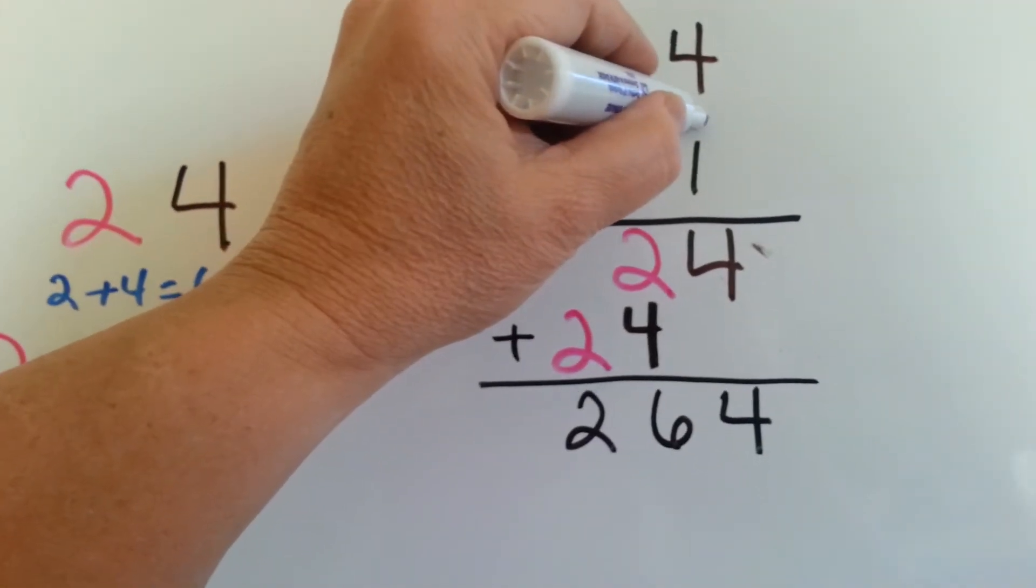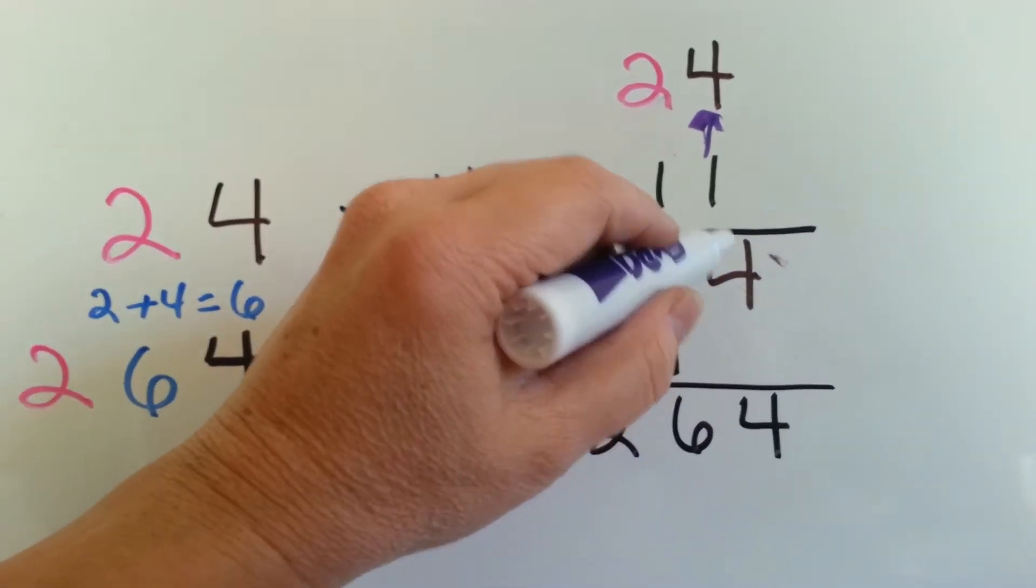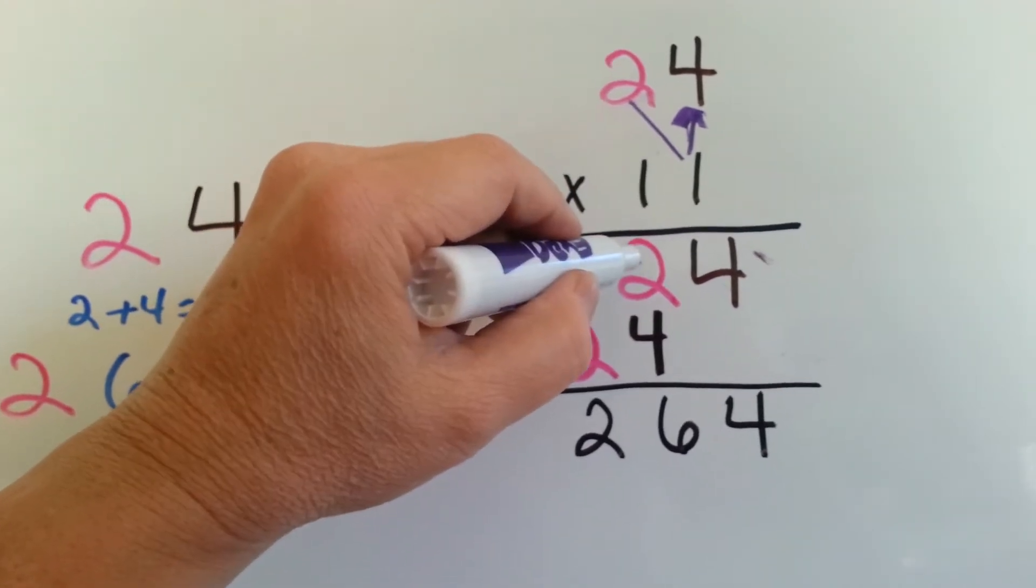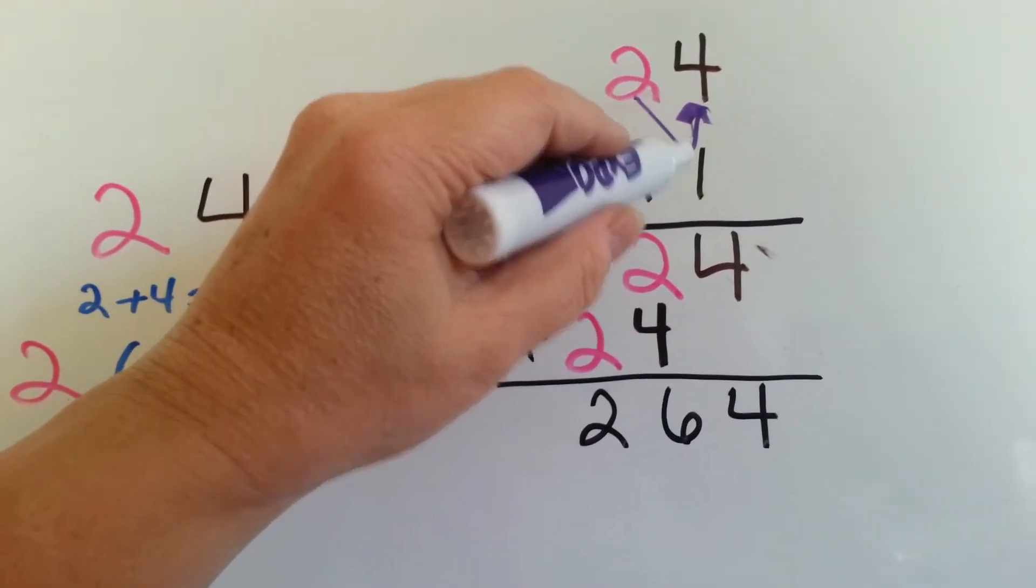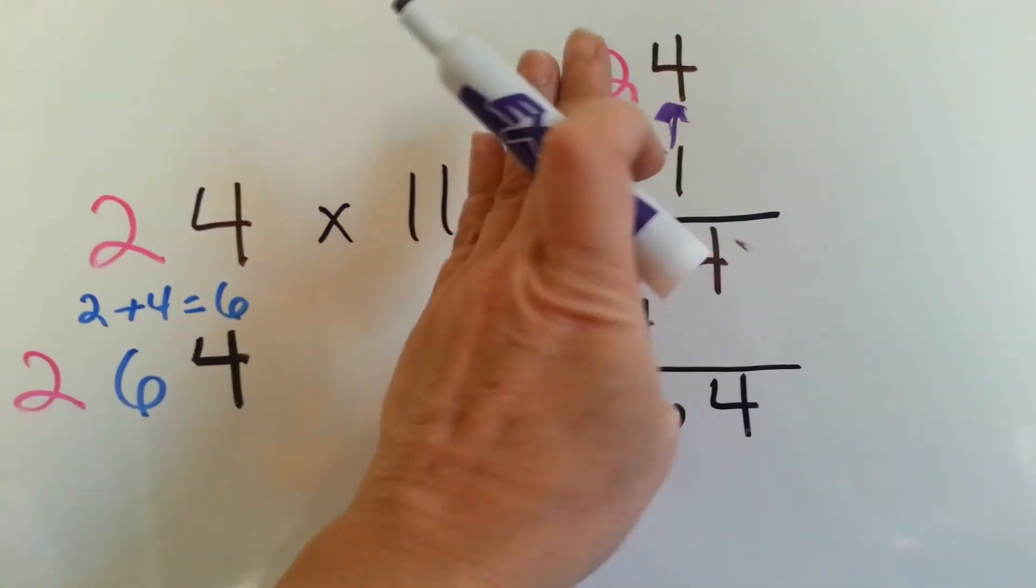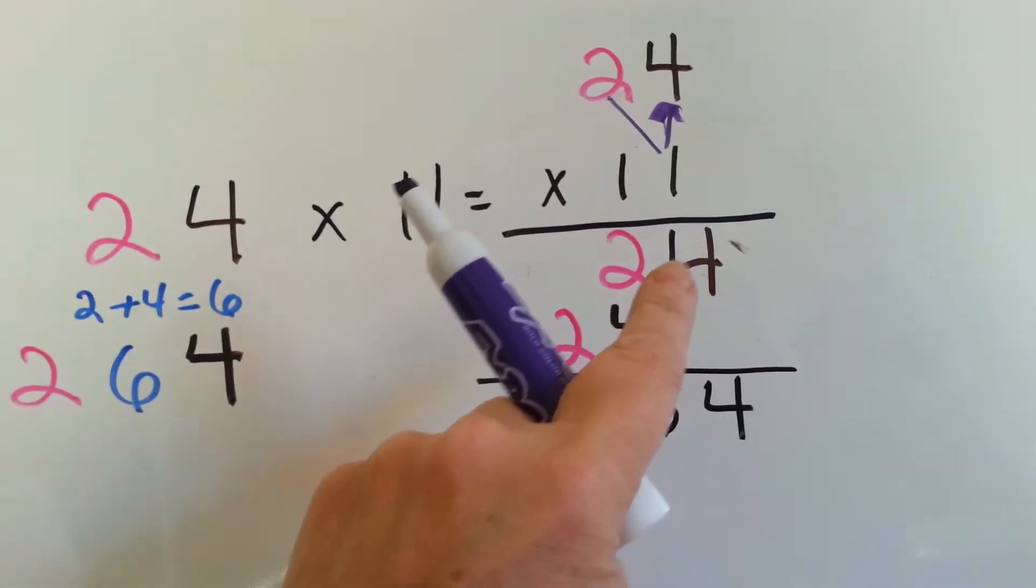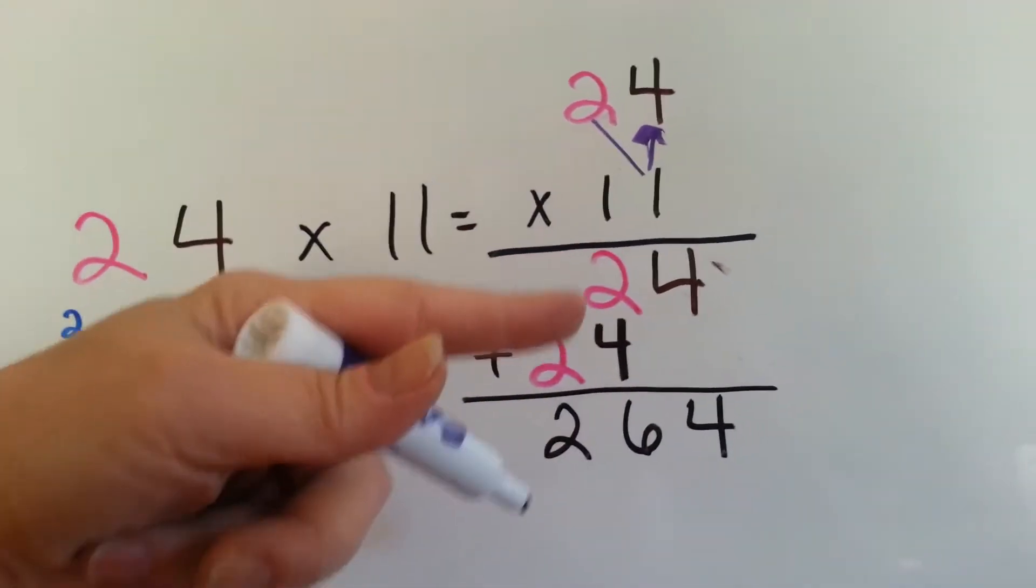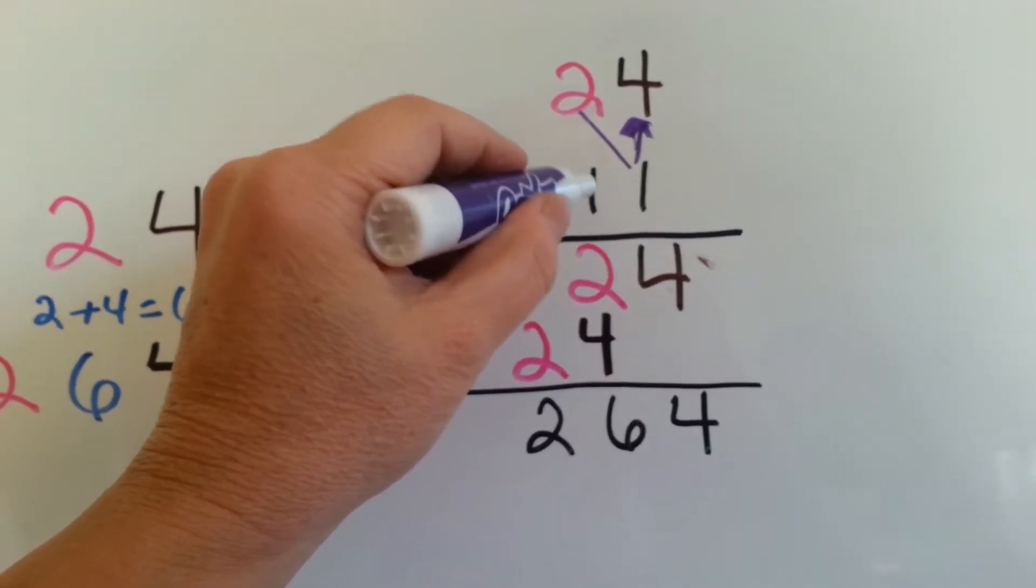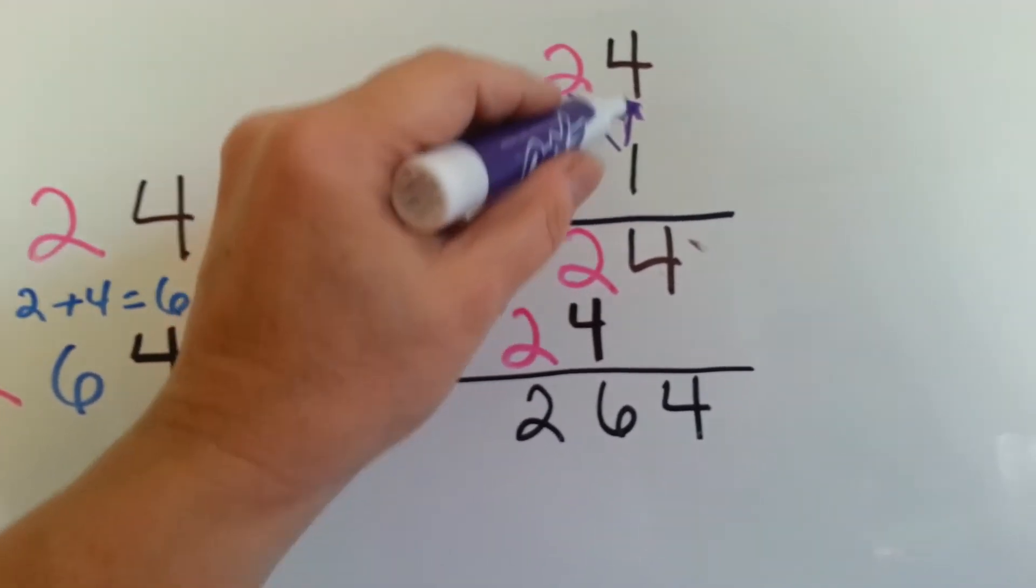We're going to multiply the 1 times the 4, right here, and we get 4. Then we multiply the 1 times the 2, and we get the 2. These are in the ones place, and that's why I lined them up down here in the ones place. See how they all line up in the ones place there? The 2 and the 4 are pushed that way. Well, when we go to multiply this one, because we did this one, we went here and here. Now it's this one's turn to go here and here.